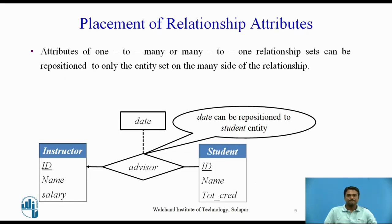The cardinality ratio of a relationship can affect the placement of relationship attributes. Attributes of one-to-many or many-to-one relationship sets can be repositioned to only the entity set on the many side of the relationship. For instance, let us specify that advisor is a one-to-many relationship set such that one instructor may advise several students, but each student can be advised by only a single instructor. In this case, the attribute date — which specifies when the instructor becomes the advisor of a student — could be associated with the student entity set, since each student entity participates in a relationship with at most one instance of instructor. This attribute designation carries the same meaning as placing date with the advisor relationship set.